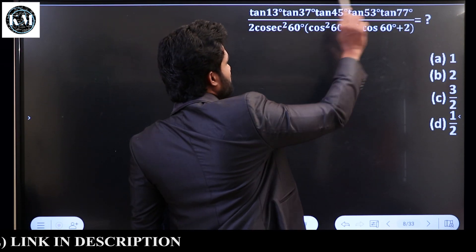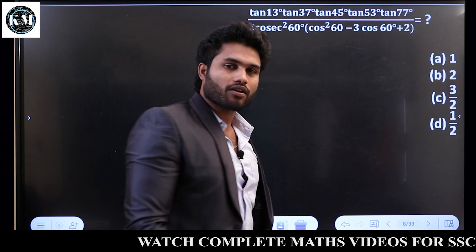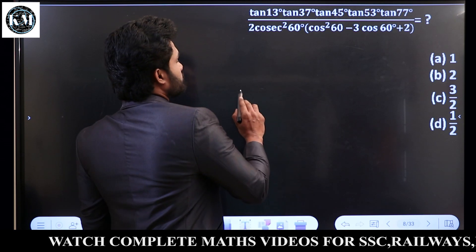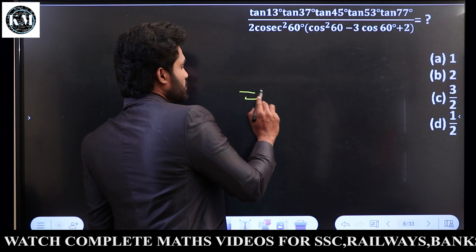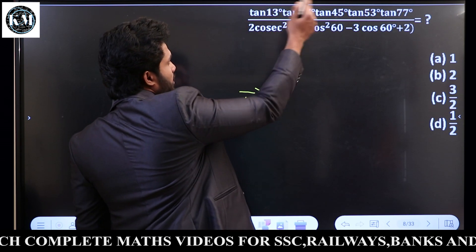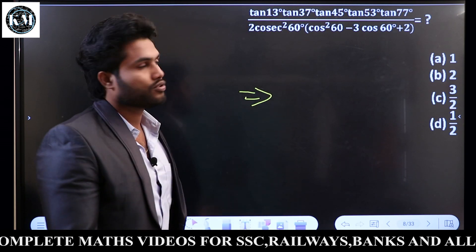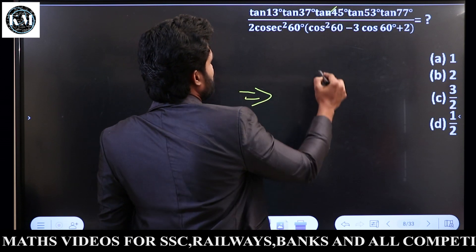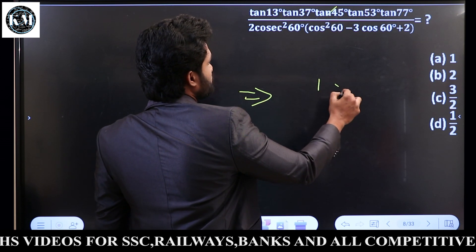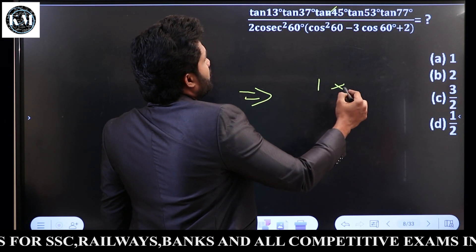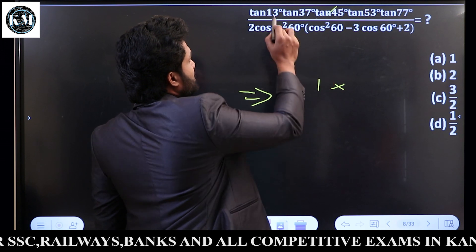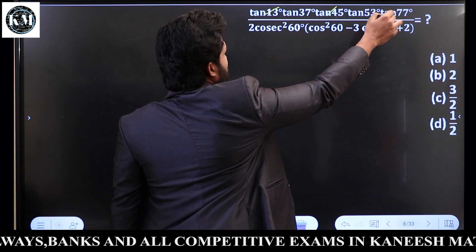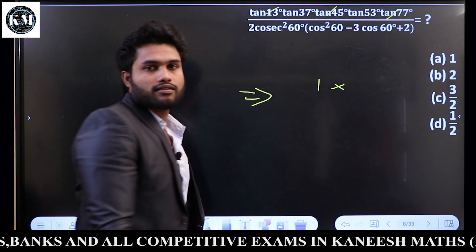Logically, we can take the maximum. 90 percentage pairs: Tan 13 × Tan 77 equals 1, Tan 37 × Tan 53 equals 1, and Tan 45 equals 1. So the numerator is 1 × 1 × 1 equals 1.